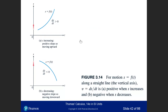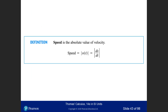Let s = f(t). If the derivative is positive at a point, speed is positive and the object is moving upward. If the derivative is negative, the object is going in the other direction. So when you take the derivative of the position function, the velocity shows direction — positive here, negative there. Absolute value gives you speed. Speed is the absolute value of velocity.